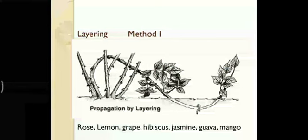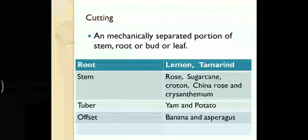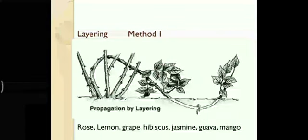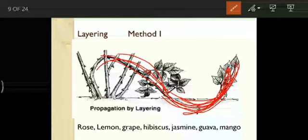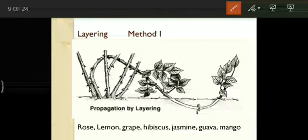Coming to layering — there are two methods. In the first method, we do not cut a piece. Instead, we take the whole branch, spread it onto the soil, and put the tip portion into the soil. When enough nutrients are available, roots develop and new branches with nodes and internodes also develop. Examples of layering: rose, lemon, grape, hibiscus, jasmine, guava, and mango.